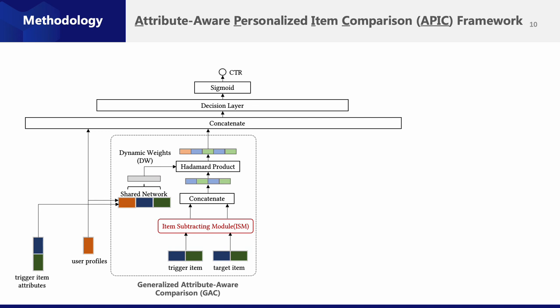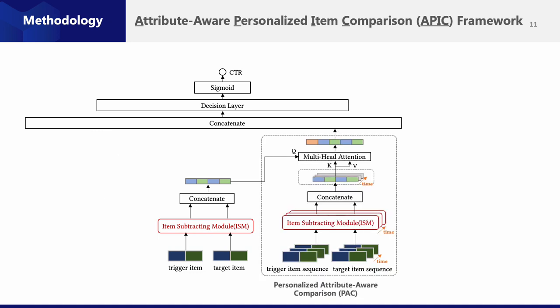In the GAC module, a dynamic weight factor is generated from the profile of the user and the attributes of the trigger item, then works on the item difference factor by a Hadamard product. In PAC, each pair of the trigger and target item in the user's past behaviors are compared and then contributes to the current state estimation, with both a recurrent network as well as a multi-head attention mechanism.